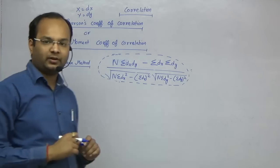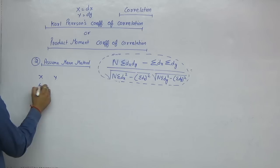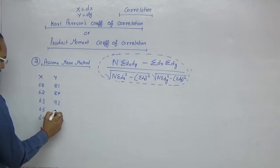Let me explain what dx and dy are. Suppose you have a series x and y. The x values are: 68, 62, 63, 65, 69. And the y values are: 81, 87, 92, 93, 85.